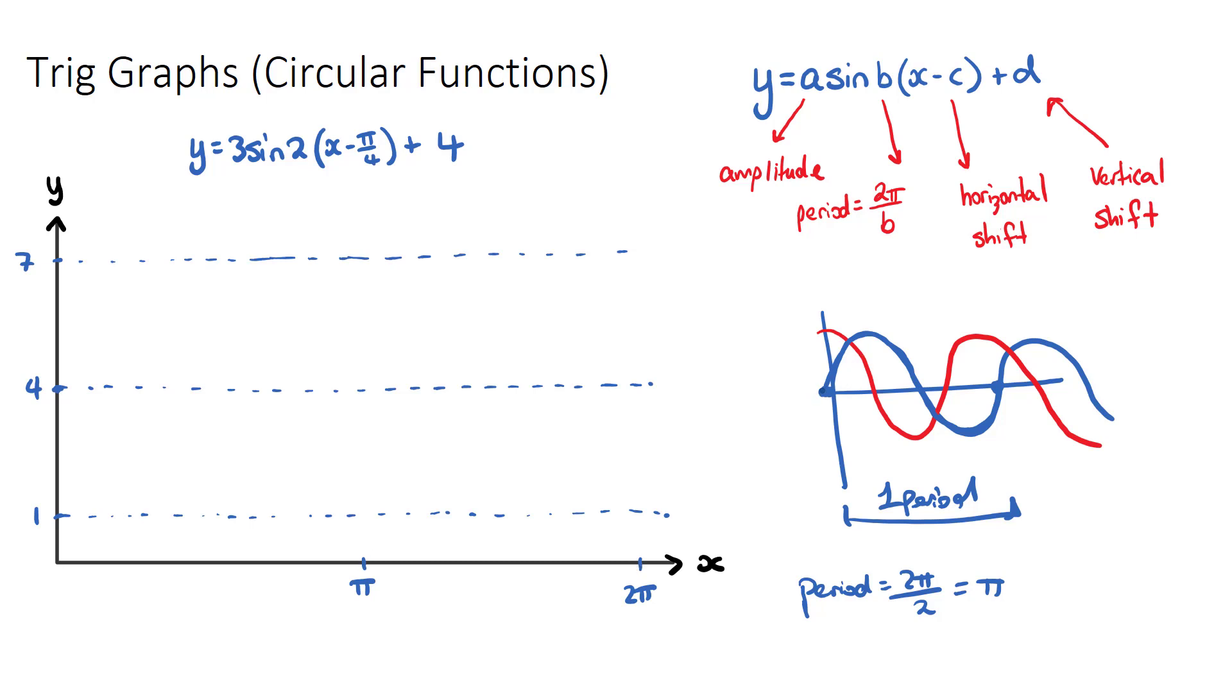Now once we know that, our trig functions have four key points. The four key points are: the max, when it comes back to its original, here at the min, and where it finishes. And obviously at the start is also important, but there's four main parts: the max, the mid, the min, then back to the mid.